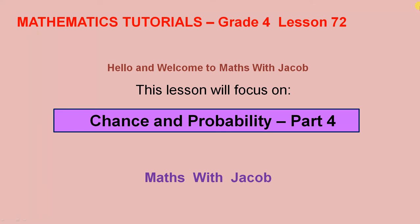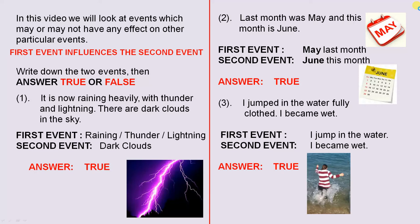Hello and welcome to Maths with Jacob. This lesson will focus on Chance and Probability Part 4. In this video we will look at events which may or may not have any effect on other particular events. We'll start off by looking at the situation where the first event influences the second event.